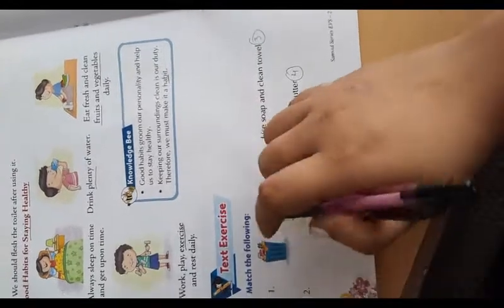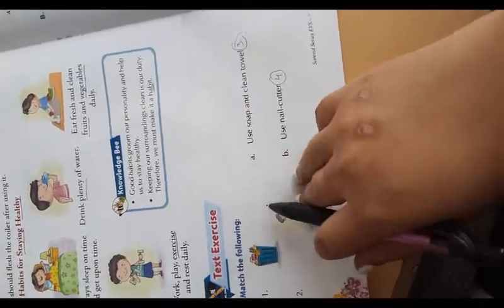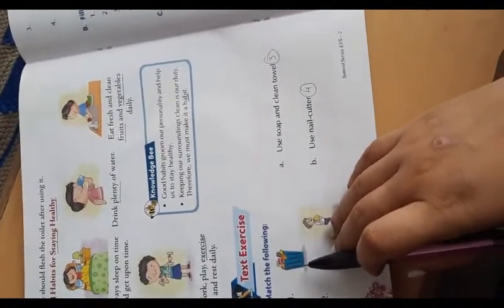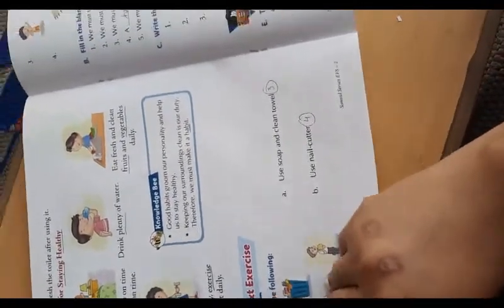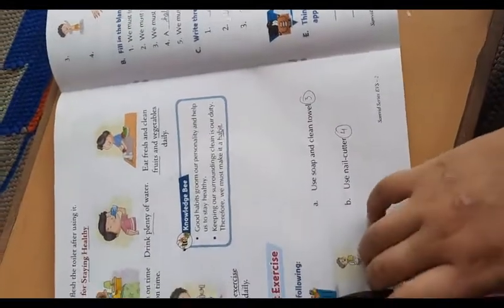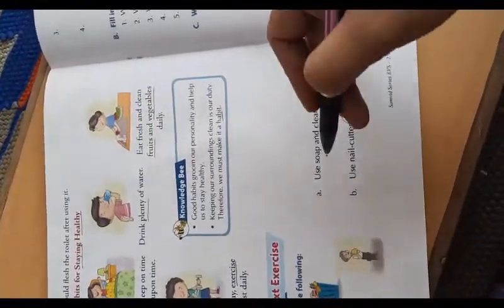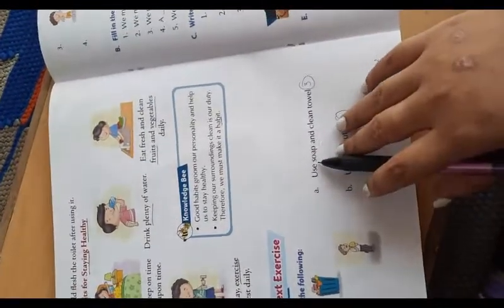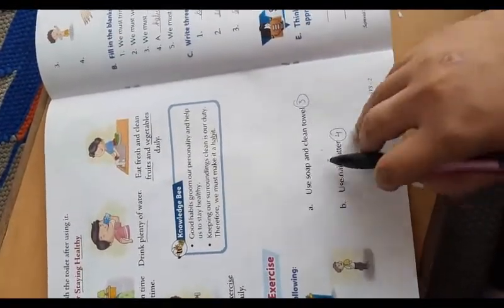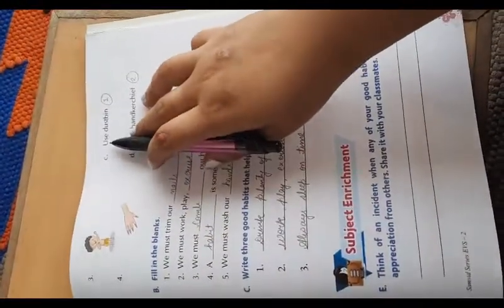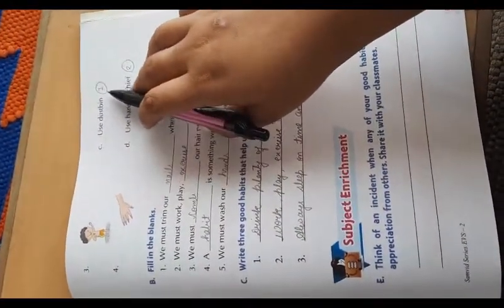Now come to the exercise. First, match the following. The first picture is of your dustbin. The first option is use soap and clean towel, second is use nail cutter, then C is use dustbin. So write here one.